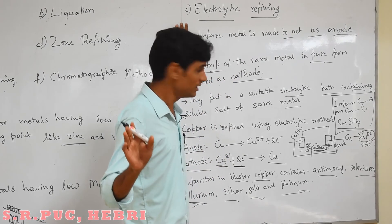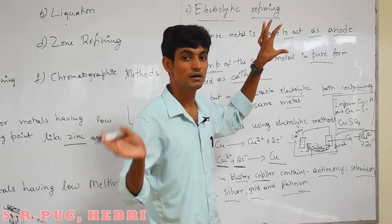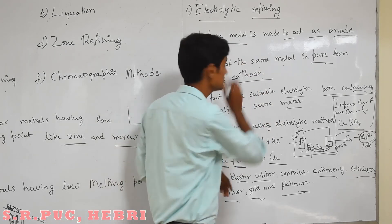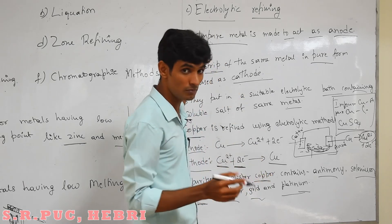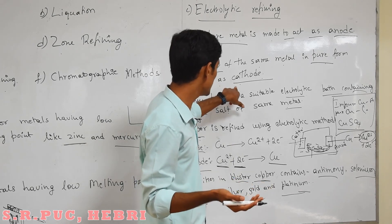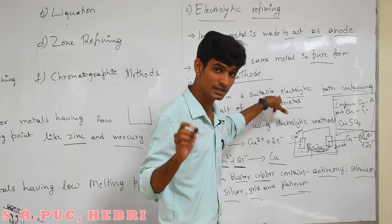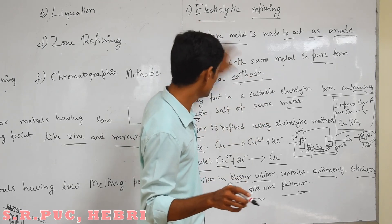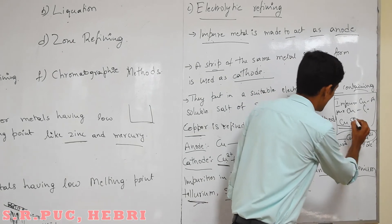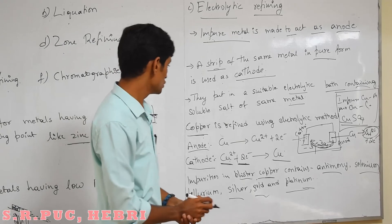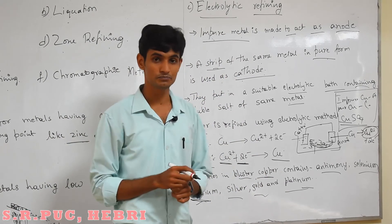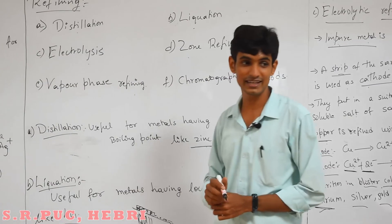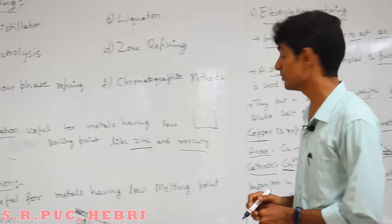To summarize electrolytic refining: the impure metal acts as the anode; the cathode is the same metal in pure form; the electrolytic bath contains the soluble salt of the same metal - for copper, acidified copper sulfate is used. In the next video we will discuss three more refining techniques: zone refining, vapor phase refining, and chromatographic methods. Thank you.